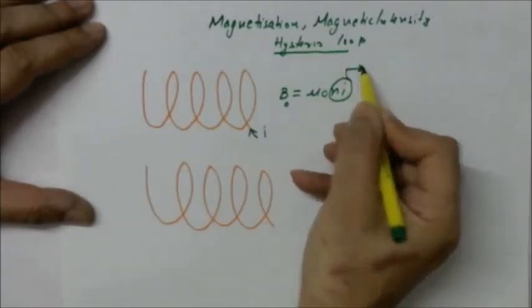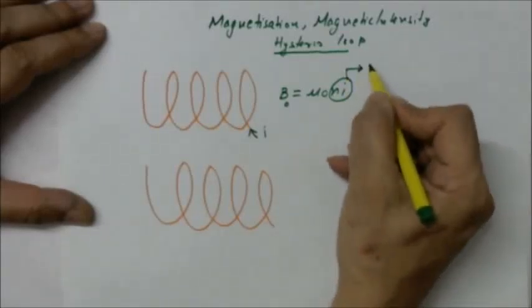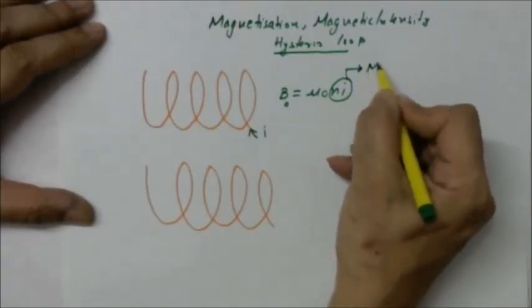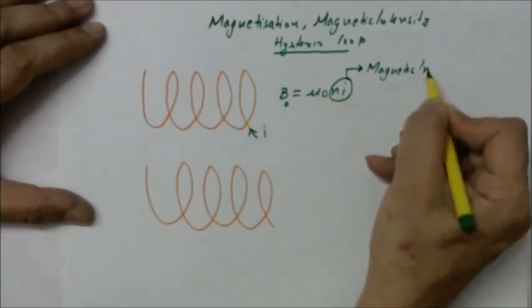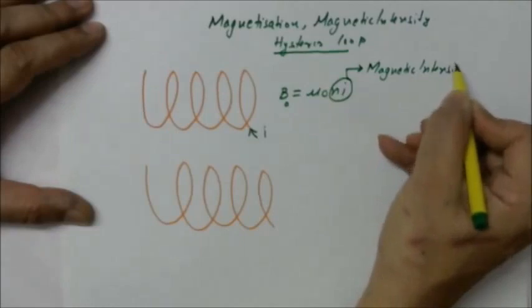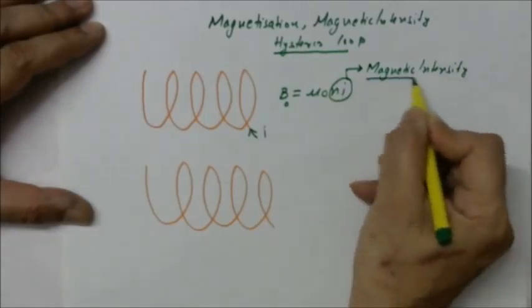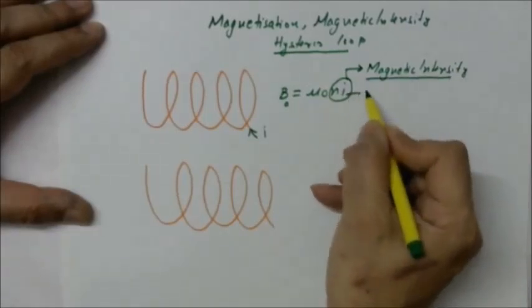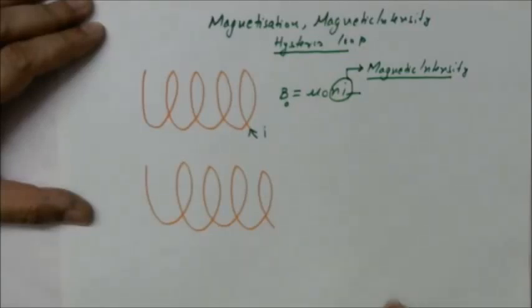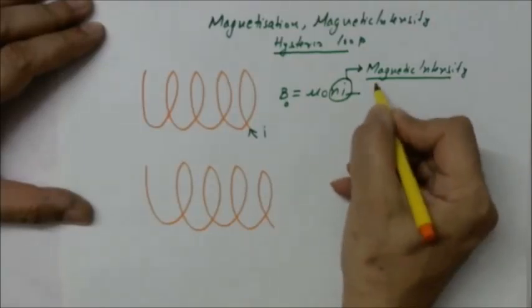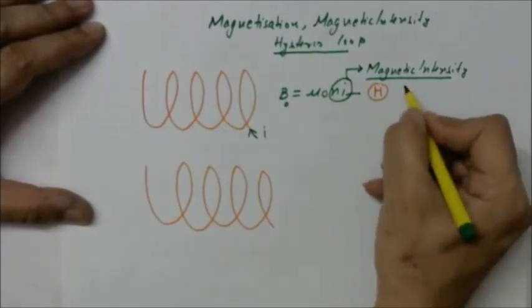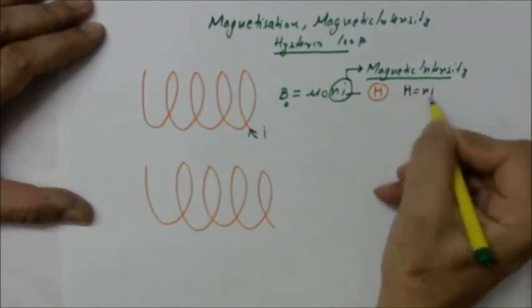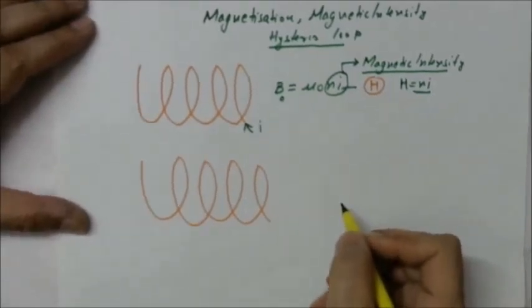This term is called magnetic intensity, and it is denoted by H. H is equal to nI.